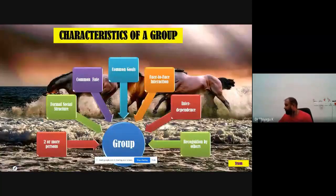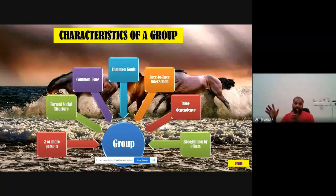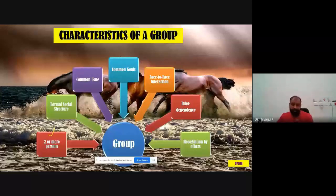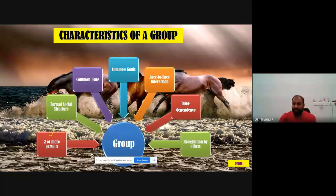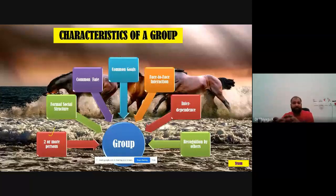The first characteristic of a group is two or more persons. We cannot call a single person a group — only when there are more than two or three people can we call it a group. Even in our classroom of 30 students, when you look deeply, there are different sub-groups: fun groups, entertainment groups, friendship groups. Within the 30 students you are connecting with each other and forming different kinds of groups.